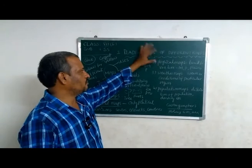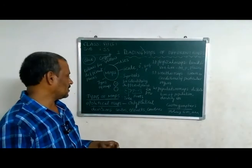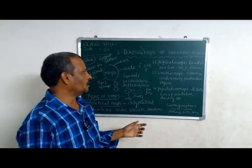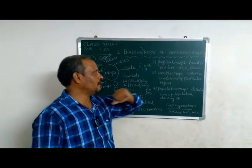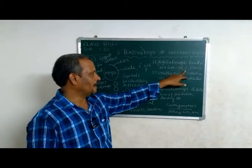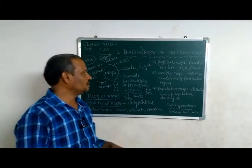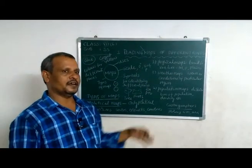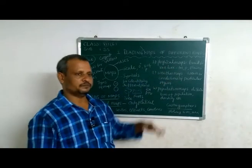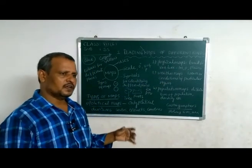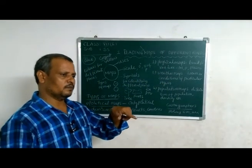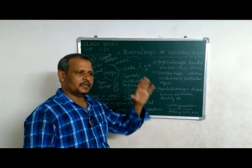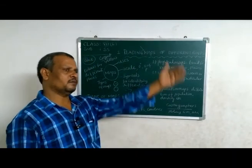The second type of map is the physical map. Physical maps show landforms such as mountains, plateaus, and plains — the natural terrain. A mountain is defined as a landform more than 900 meters in elevation.